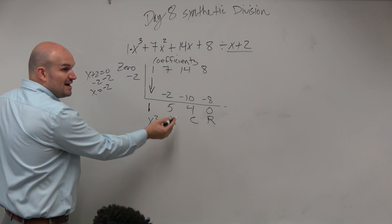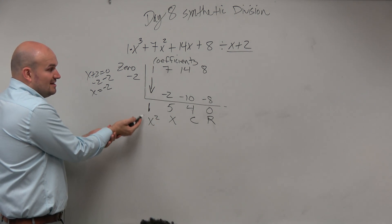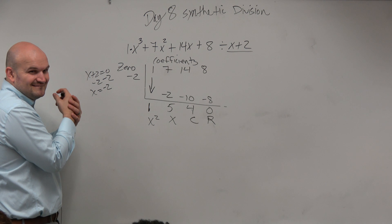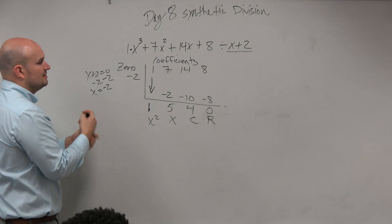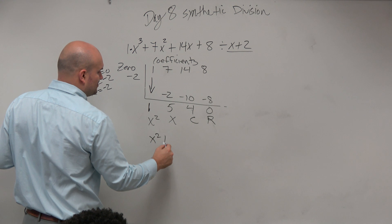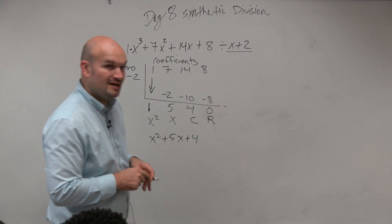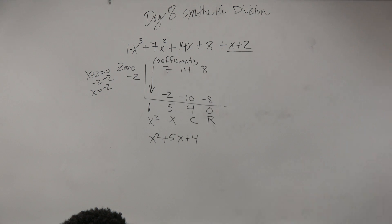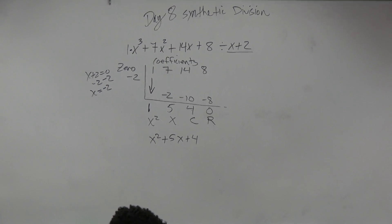So this is my quotient. If this is my quotient, then we could say that it's also a factor. We can write that as x squared plus 5x plus 4 as my factor. That's important, because last class period we learned that if we know factors from division, then we can continue factoring.